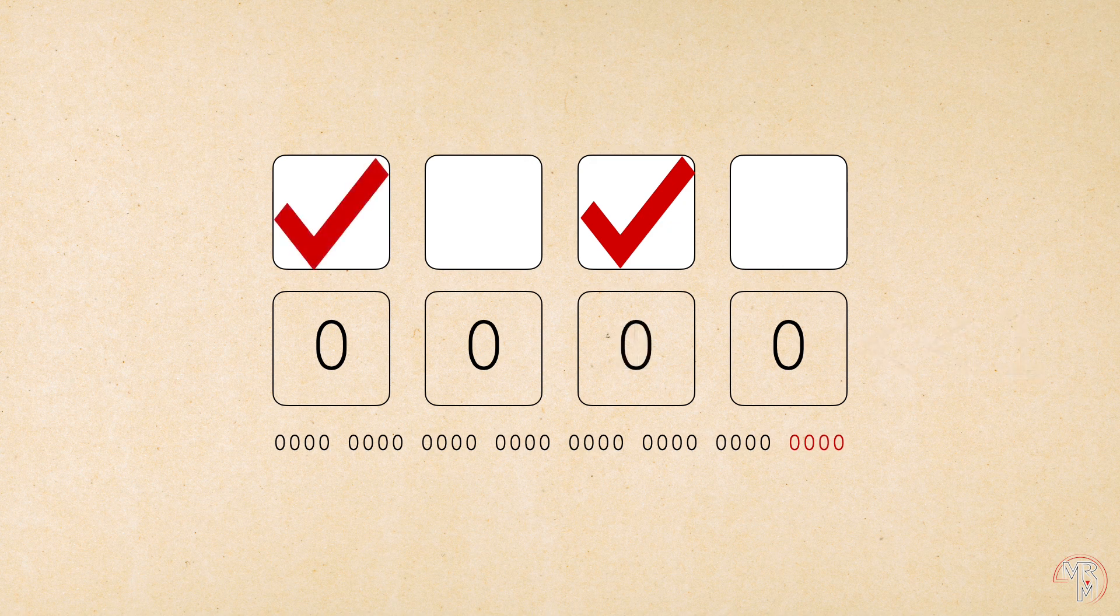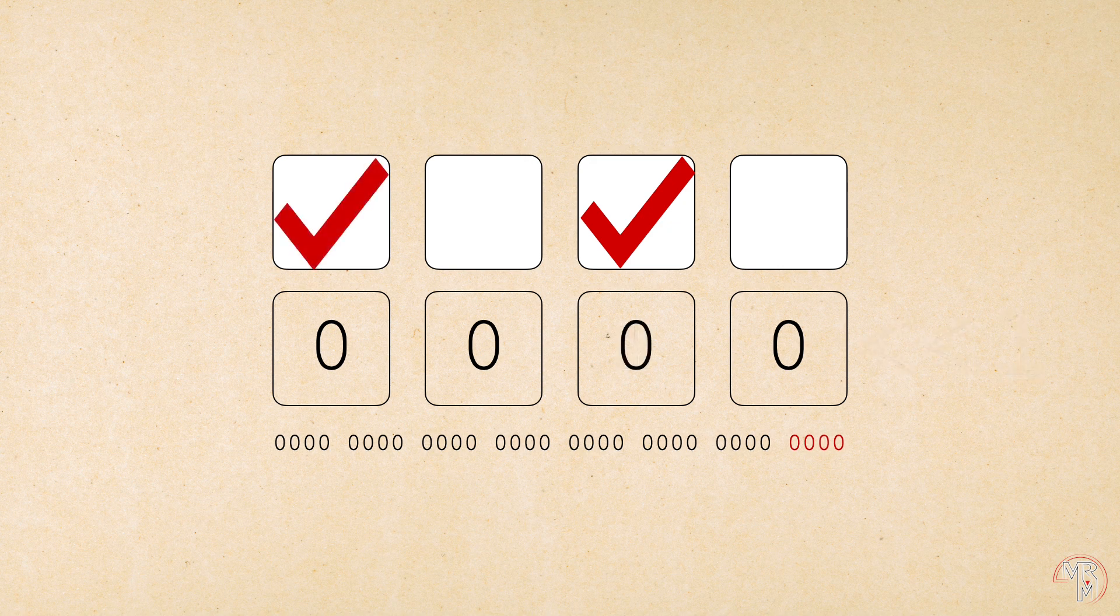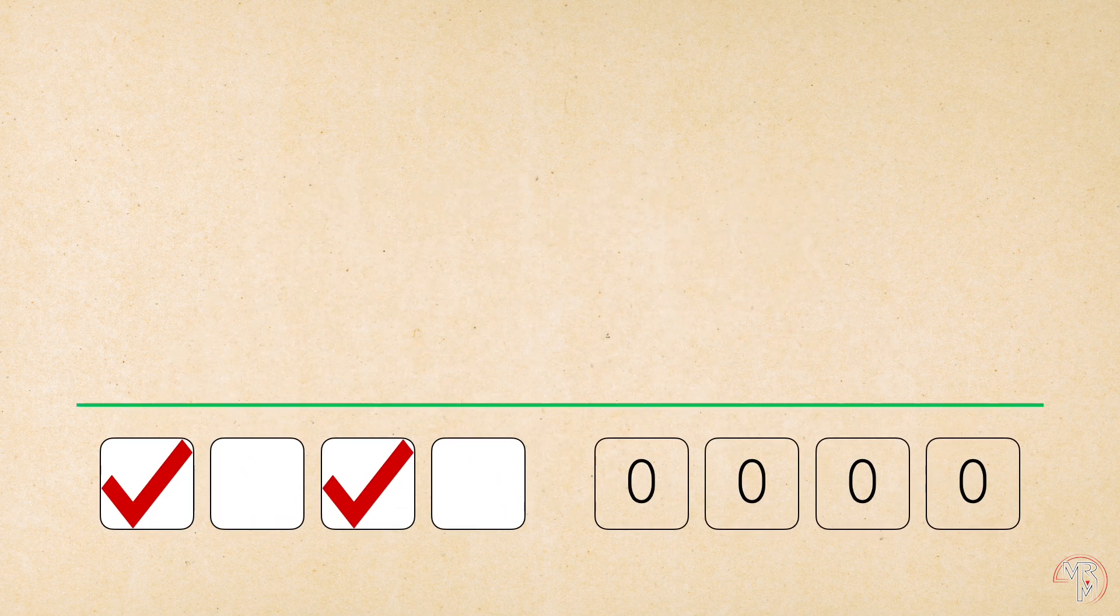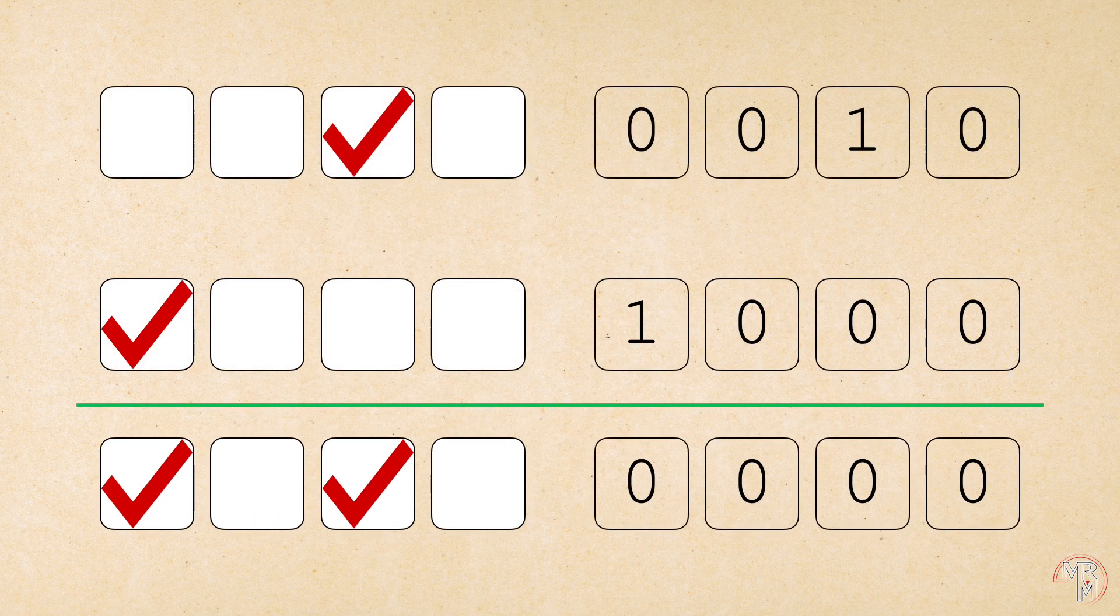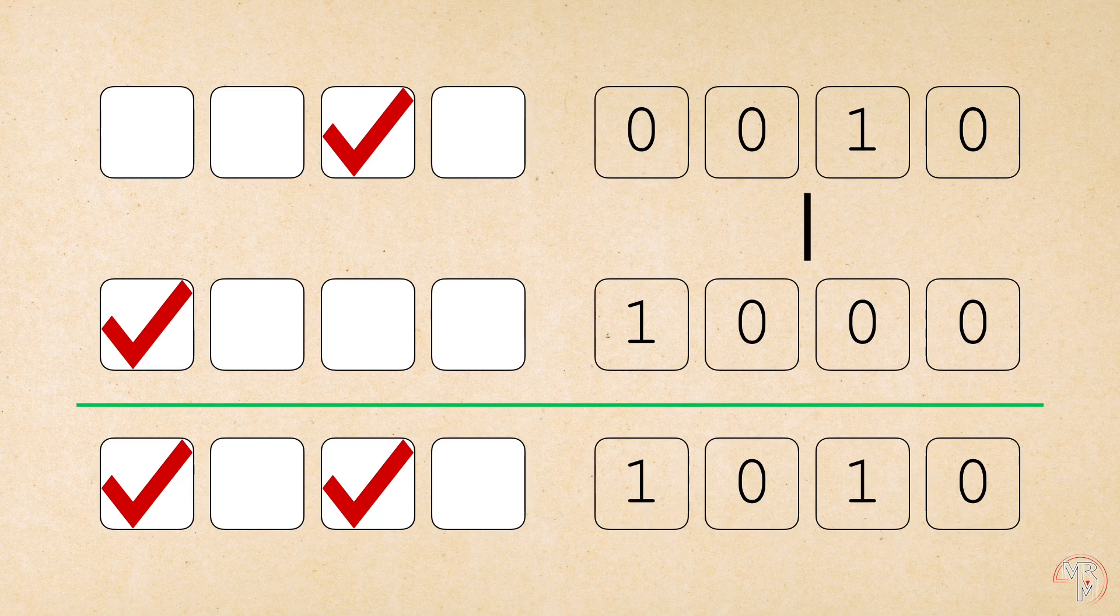All right, then what if we wanted to have both the second and the fourth checkboxes on? In this case, we apply the bitwise OR to the individual bit masks. So, zero, zero, one, zero, or one, zero, zero, zero results in one, zero, one, zero, which is what we need. All right, so we now know how to create a bit mask. But how do we use it?